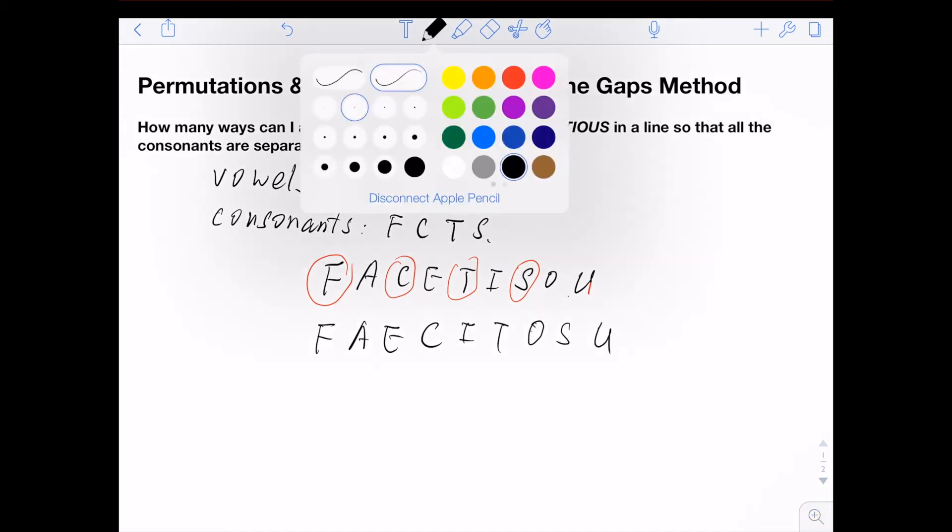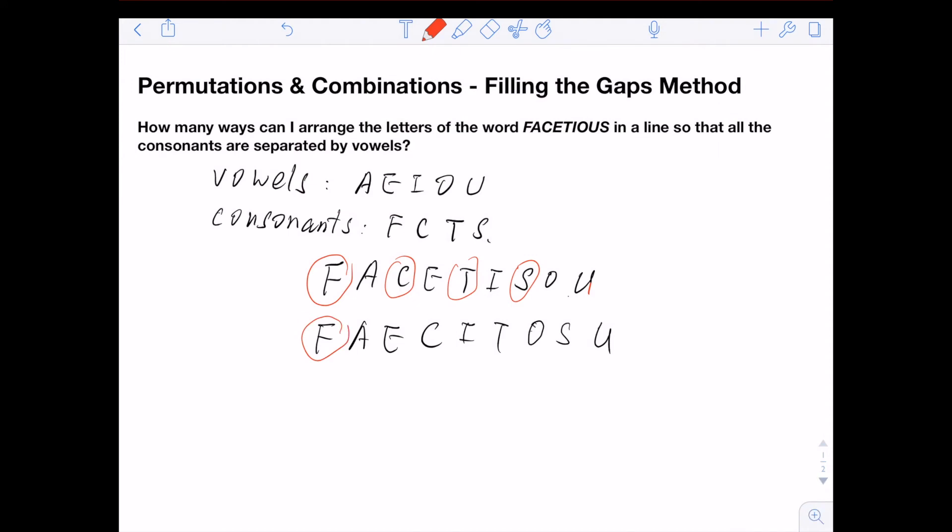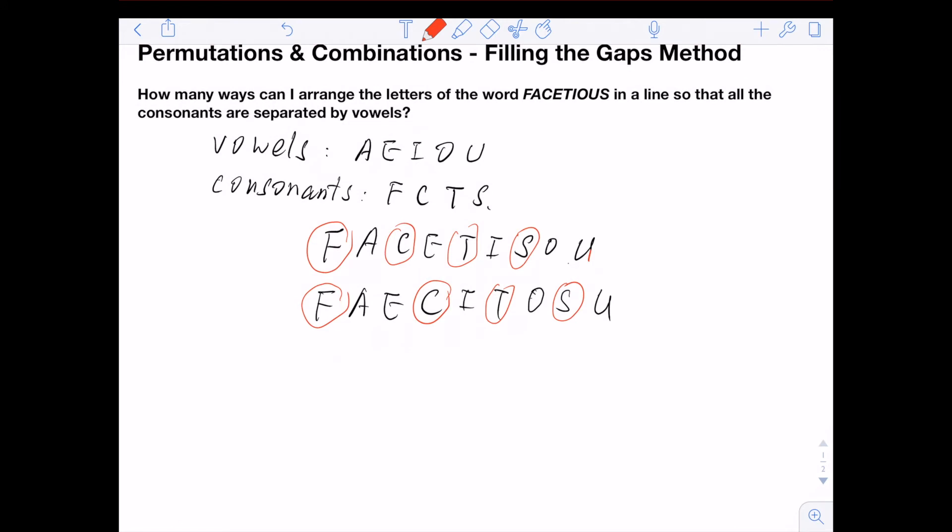You can see my consonants here, but this time separated by two vowels, and then another consonant separated by another vowel, another consonant, another vowel, another consonant. We have a lot of different possibilities. They can be separated by two vowels or by one vowel.